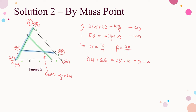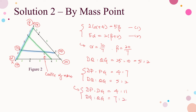Now combine the figures and results for the required ratio. DP to PG is 4 to 7, meaning DP to DG is 4 to 11. DQ to QG is 5 to 2, meaning DQ to DG is 5 to 7. To combine with the common part DG, multiply the first ratio by 7 and the second by 11. We have DP to PQ equals 28 to 22, that is 14 to 11.